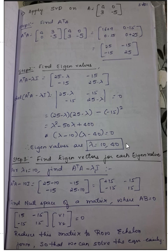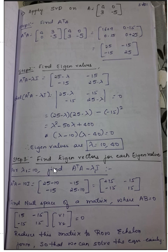Step three is to find the eigenvectors for these eigenvalues. We consider the characteristic equation A transpose A minus lambda I and substitute each value of lambda. For lambda equals 10: substituting gives 25 minus 10 = 15 on the diagonal entries and minus 15 off-diagonal. This is A transpose A minus lambda₁ I.